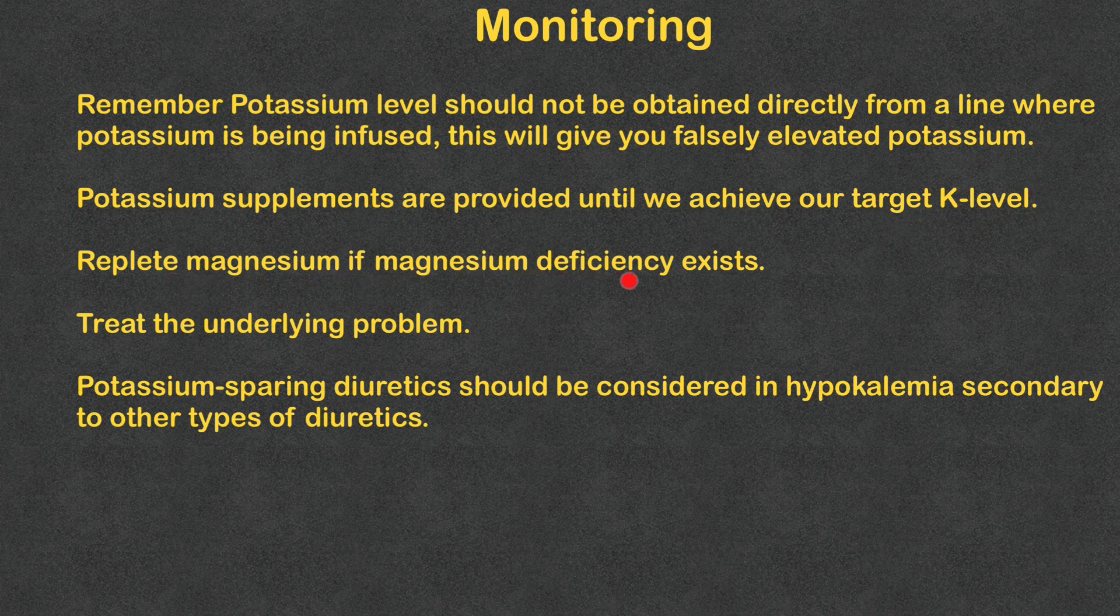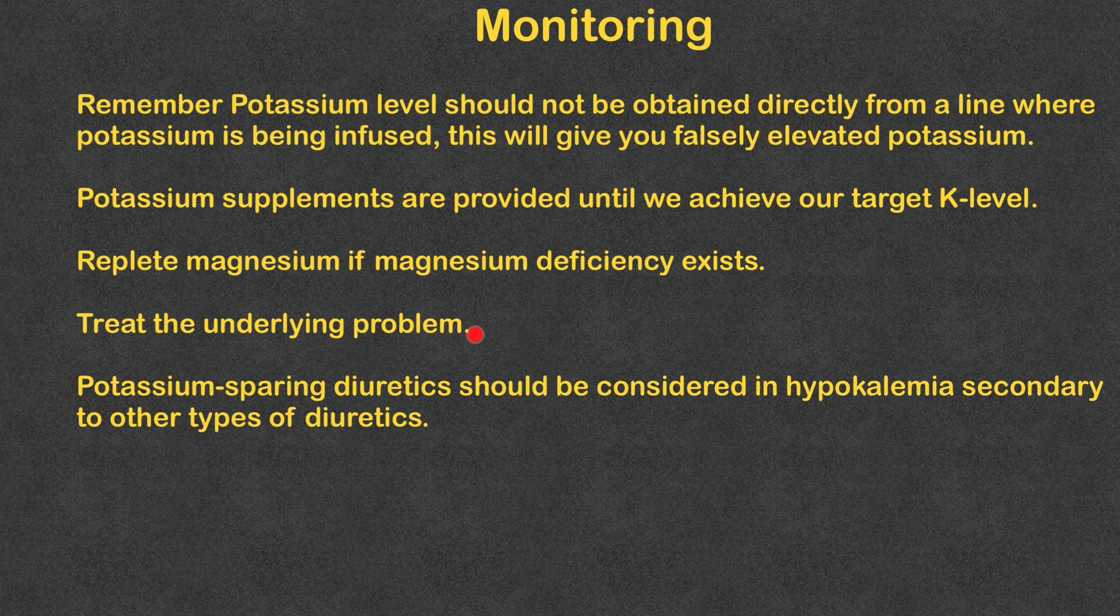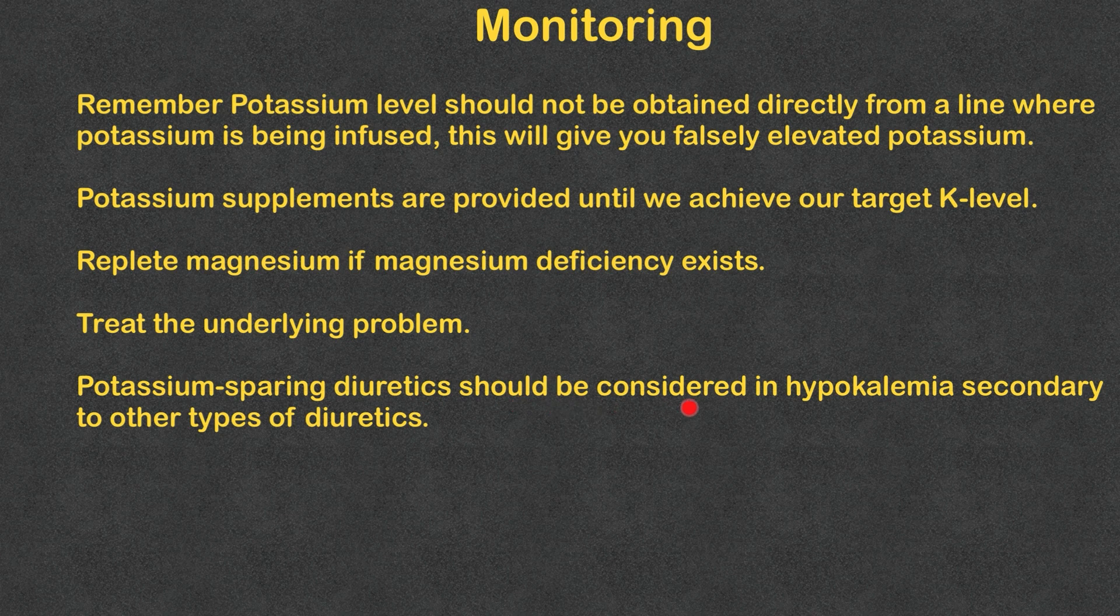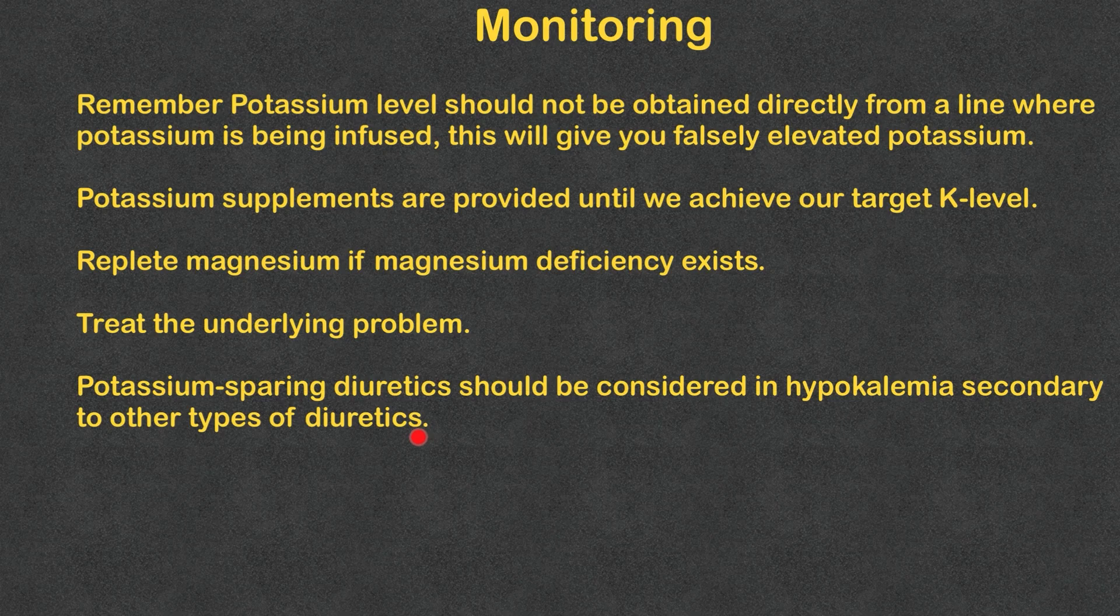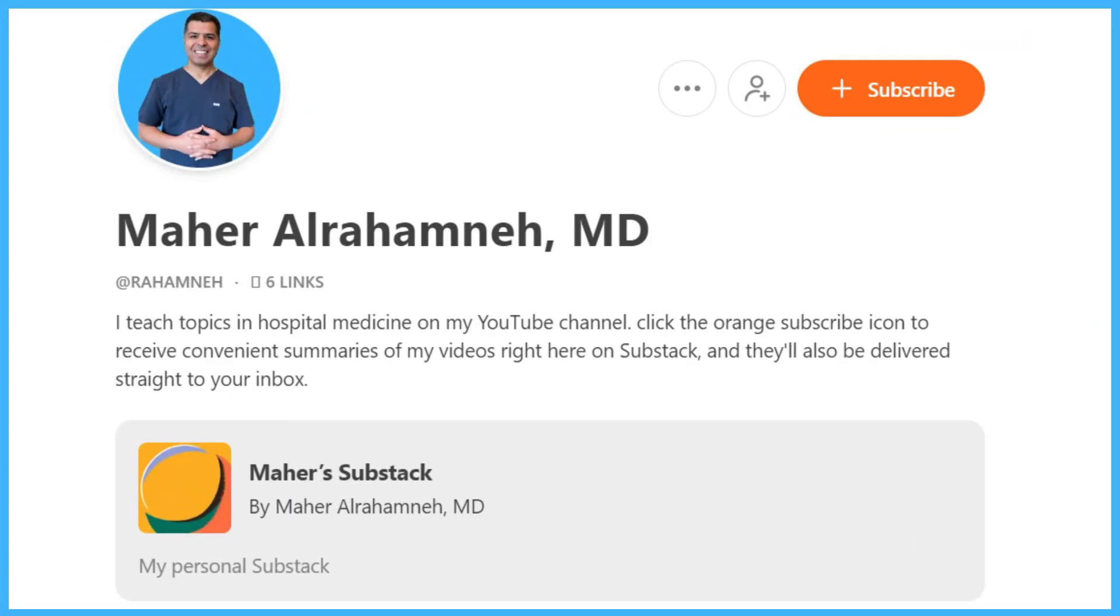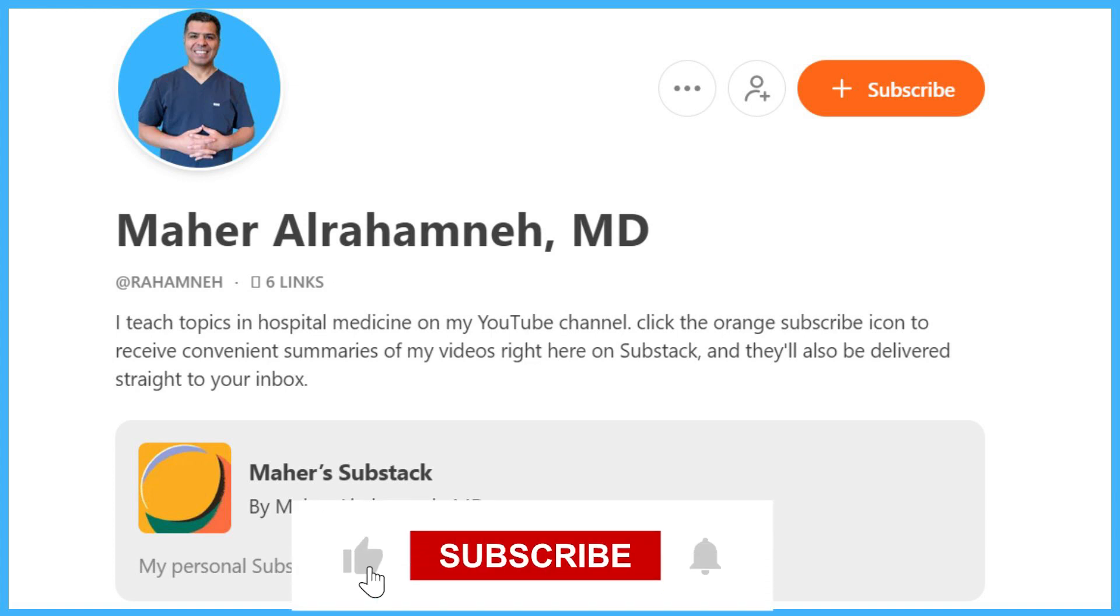Potassium supplement should be provided until we achieve our target level. Replete magnesium if magnesium deficiency exists. Remember that and don't forget to treat the underlying problems. One last thing I want to mention: potassium-sparing diuretics should be considered in hypokalemia secondary to other types of diuretics, whether carbonic anhydrase inhibitors, loop diuretics, or thiazide diuretics. In the end, if you would like to receive a summary of this video, please subscribe to my Substack. The link is provided below. If you find this video useful, please give it a like, share it with your colleagues, and thanks for watching.